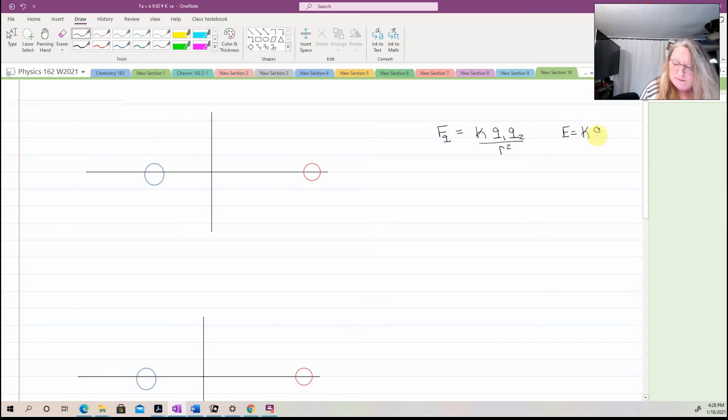The charge, I couldn't make up my mind. Hold on, let me make that a pretty Q. I couldn't make up my mind if I wanted a capital Q or a lowercase Q. Let's go with an uppercase Q because we're looking at only one charge at a time. So that's the charge creating the field divided by the distance away that you're measuring that field strength.